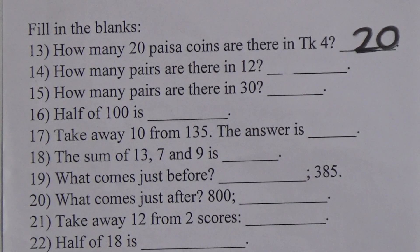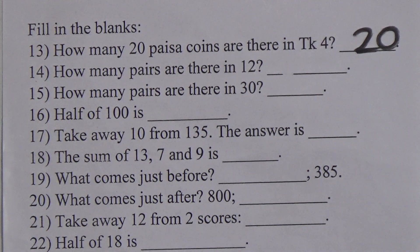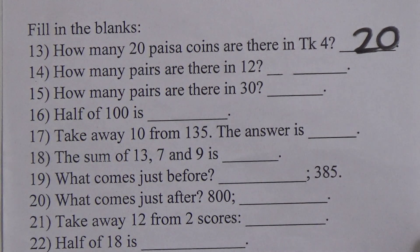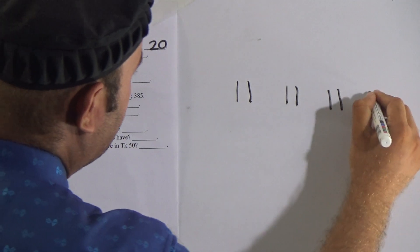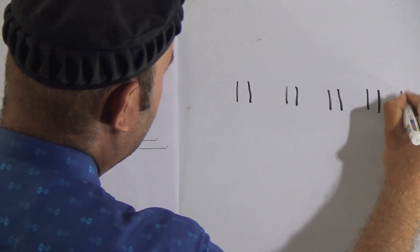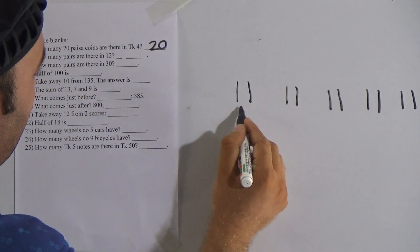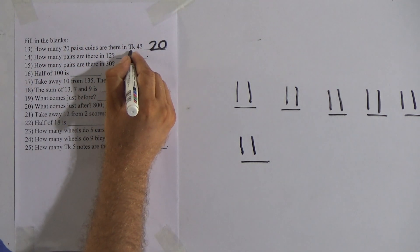Now number 14: how many pairs are there in 12? A pair is made with two things — two items make one pair. Counting from 1 to 12: 1-2, 3-4, 5-6, 7-8, 9-10, 11-12 — that gives us 6 pairs. So how many pairs are there in 12? The answer is 6.